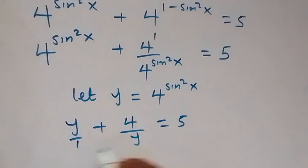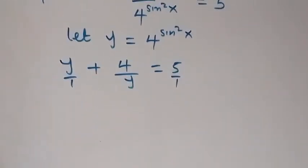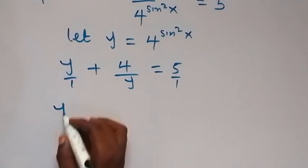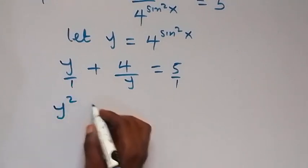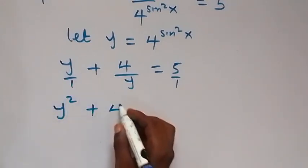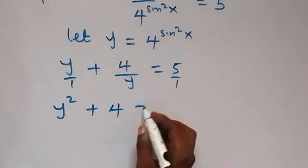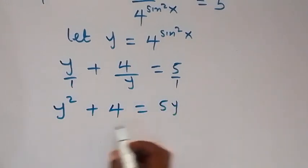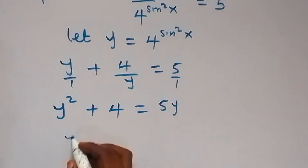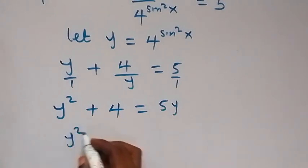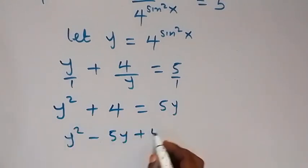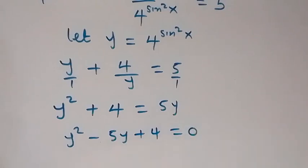The LCM is y, so we multiply through by y. This gives y squared plus 4 equals 5y. Bringing 5y to the left side, we have y squared minus 5y plus 4 equals 0.